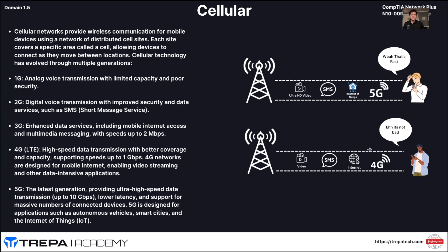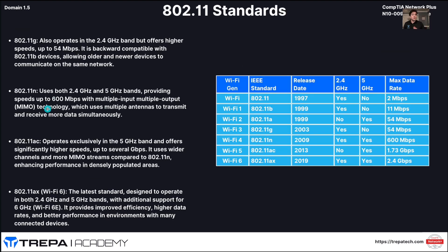Now let's go over cellular standards. Cellular networks provide wireless communications from your cell phones — those SIM cards and antennas in your phones — and it's been through lots of different evolutions. Currently we're on 5G. Also worth noting: Wi-Fi 7 is currently out as of this recording — it's 802.11be — and has increased data speeds. It's not on the exam objectives, but just wanted to point that out.